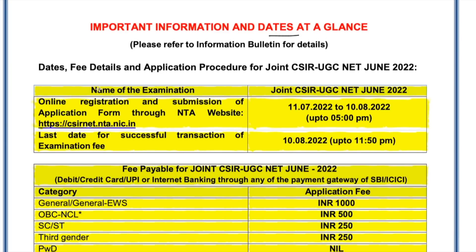The name of the exam is CSIR UGC NET June 2022. They have skipped the December 2021 exam — the previous exam was June 2021 and now we have June 2022, so one exam is skipped. What will happen regarding that — whether seats have been increased — is not yet clear.